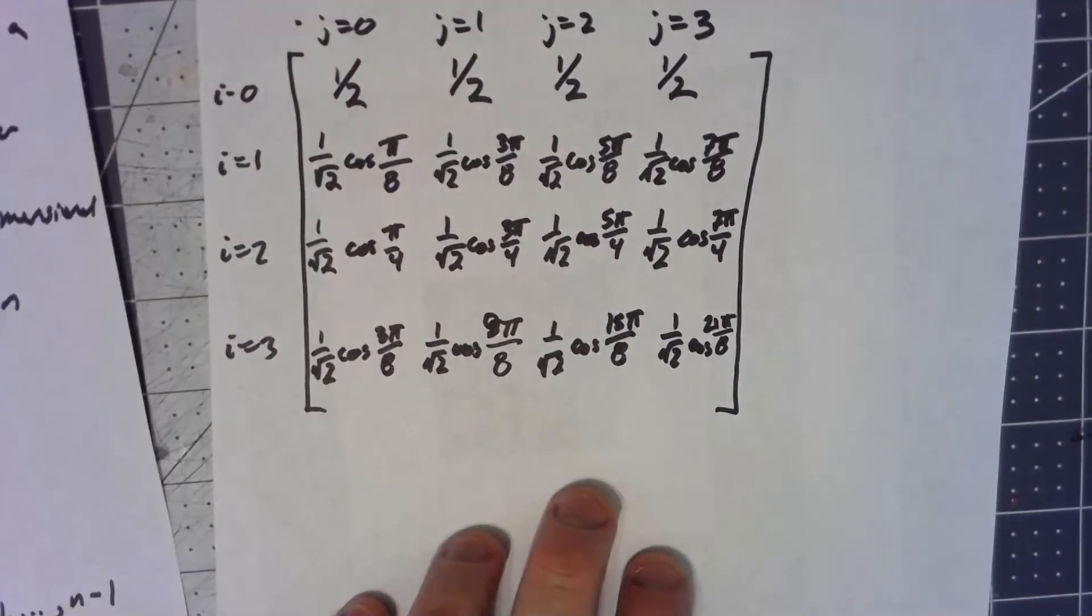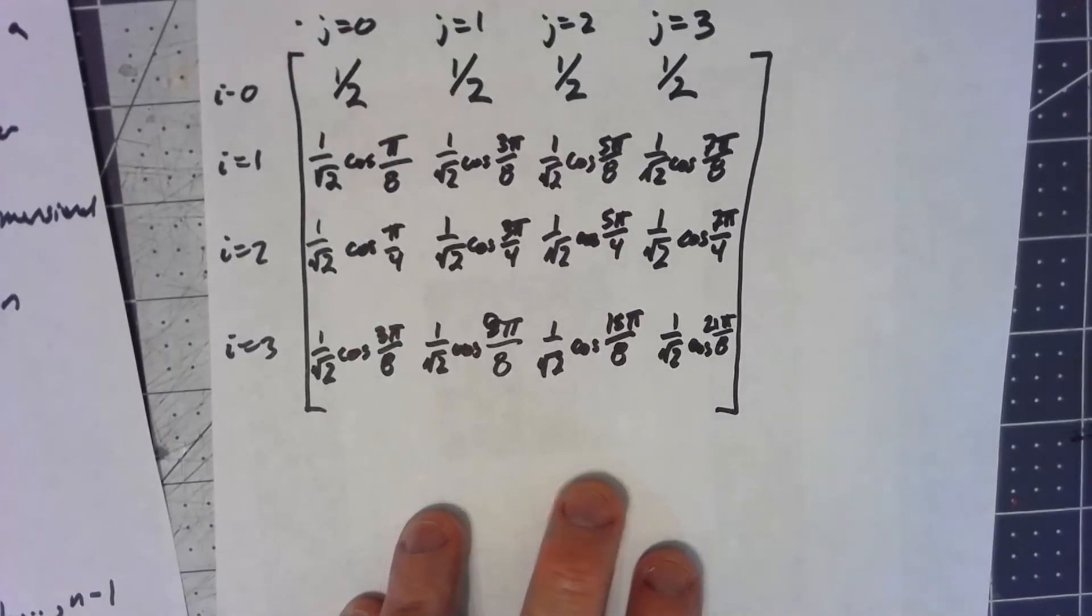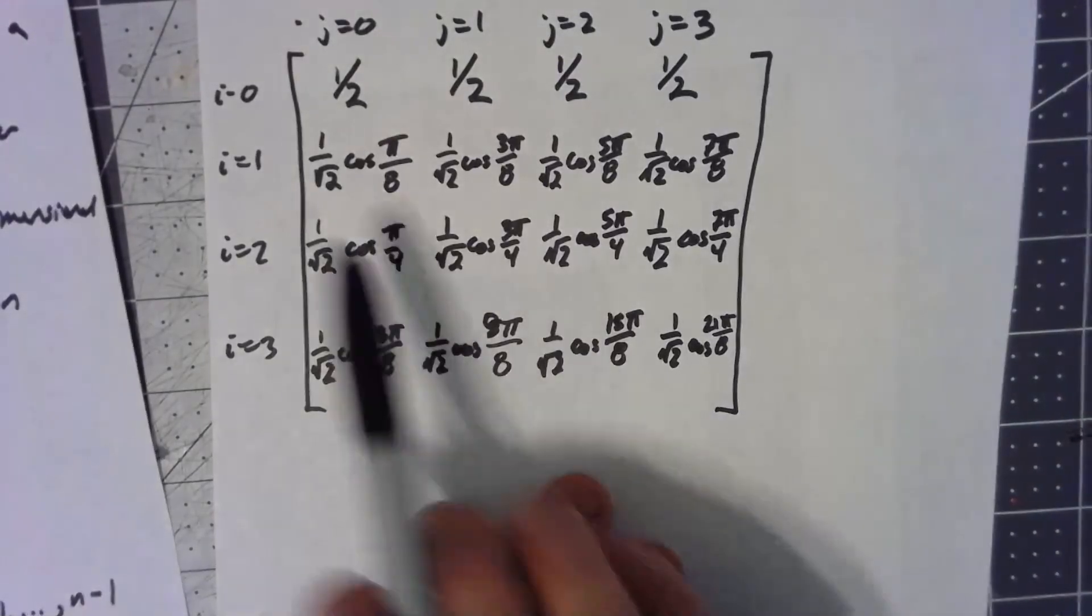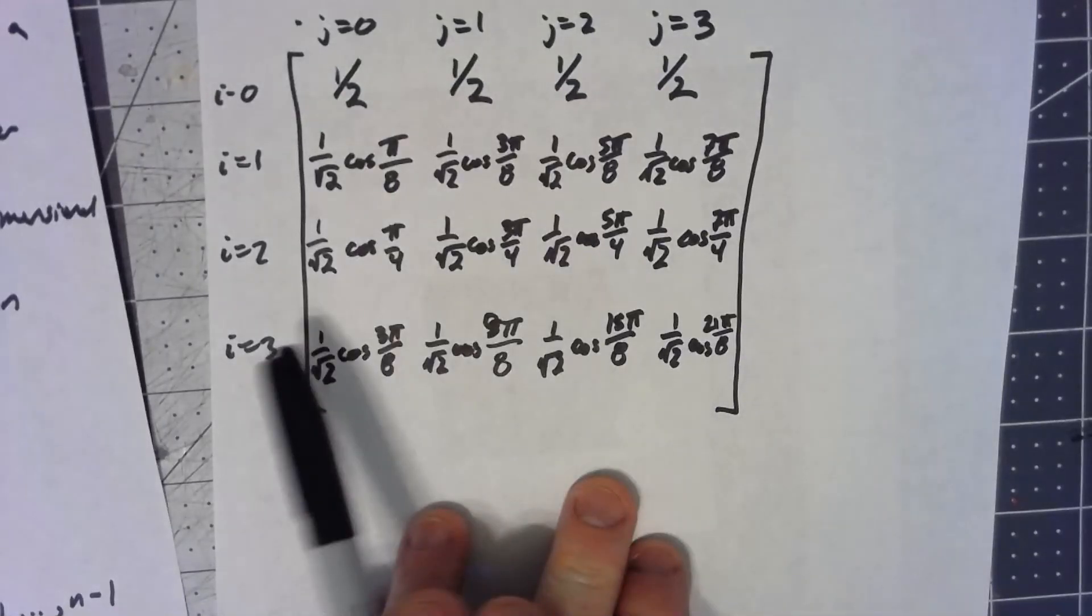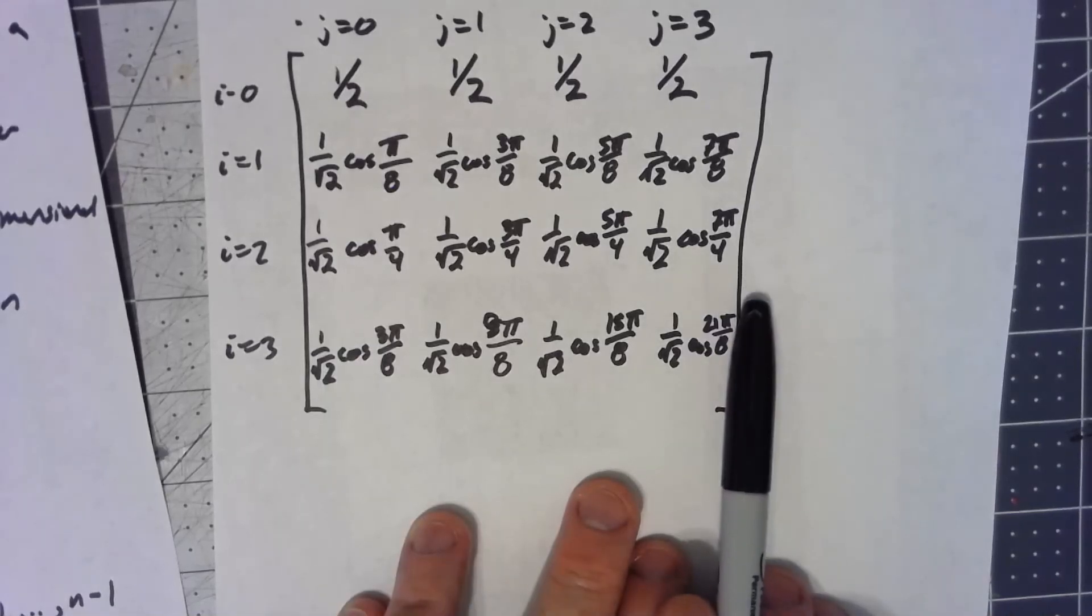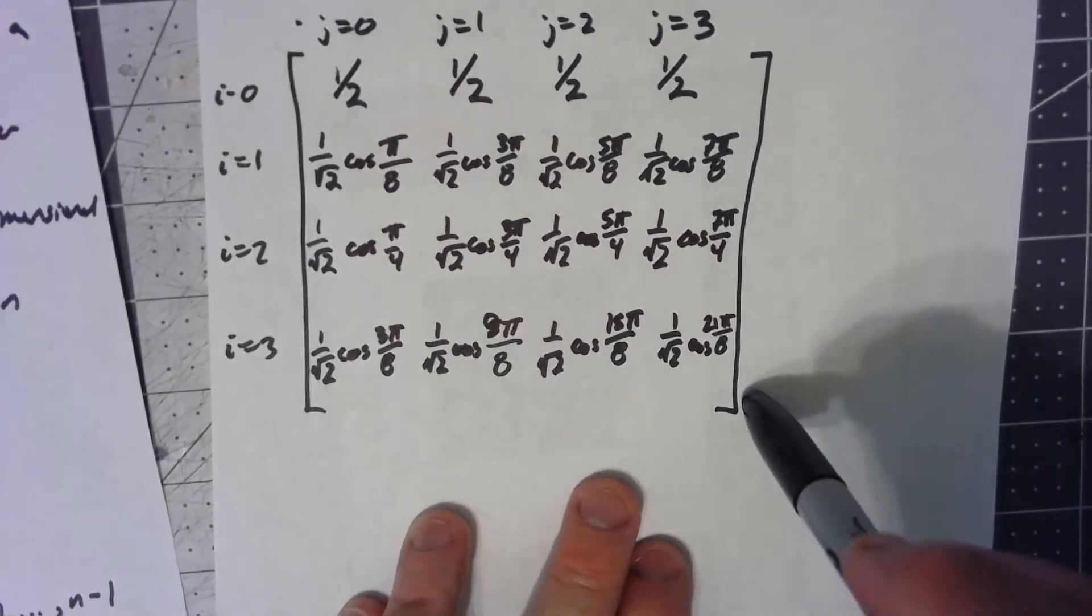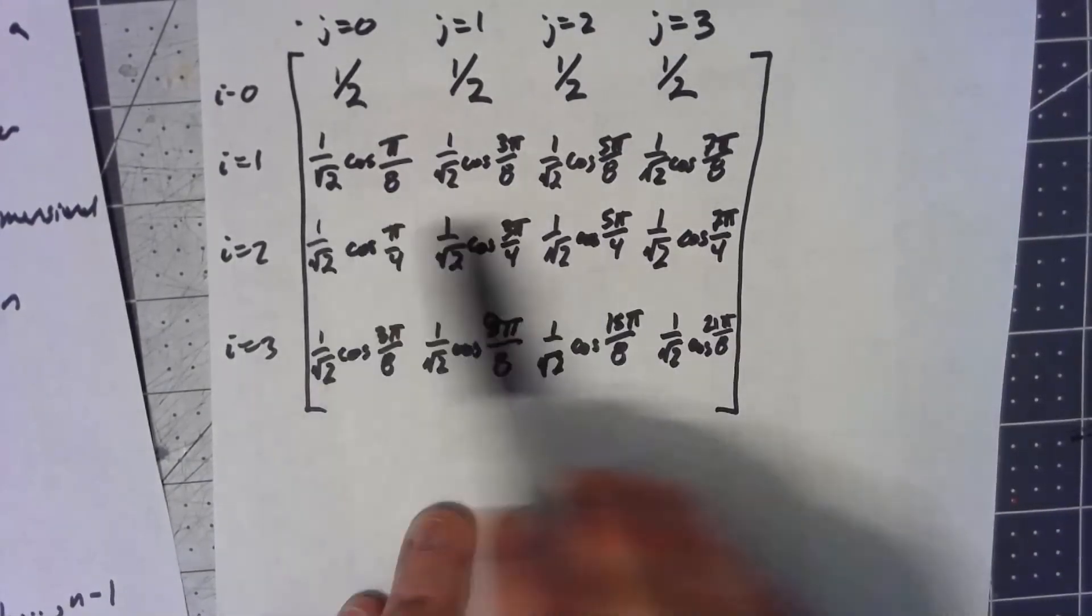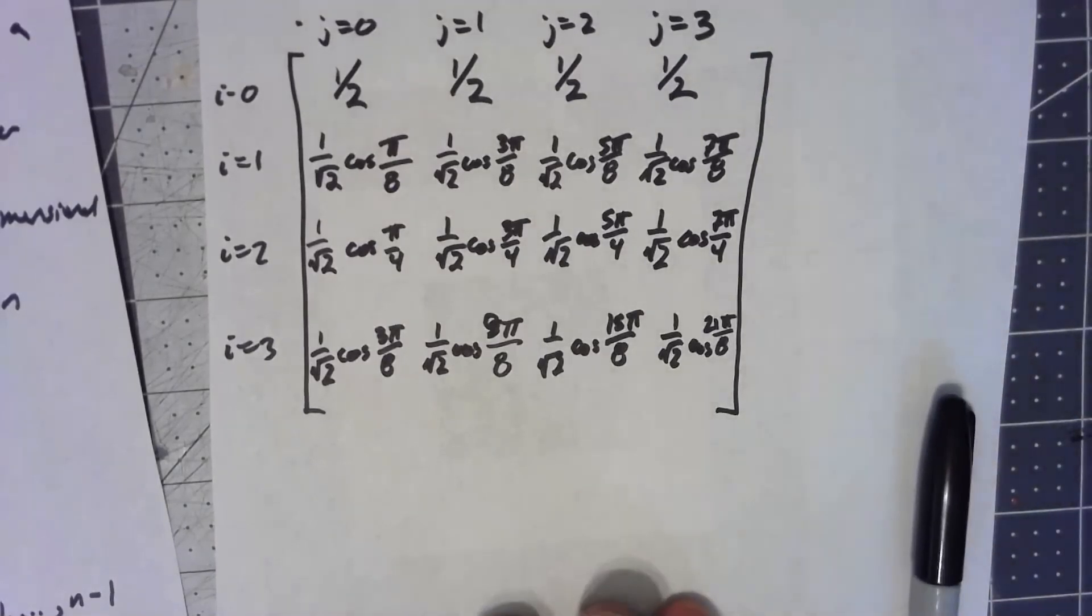So doing a DCT is just multiplication by this matrix. And again, the whole idea is that these lines, each row, is an orthonormal vector. Each one of these things has a norm of 1, so that when I multiply by this I'm basically getting the dot product and getting the coefficient of that vector that corresponds to the component.